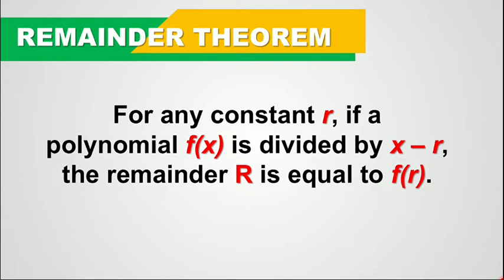Hi guys, in this video I will be explaining to you how the remainder theorem works. So according to this theorem, for any constant r, if a polynomial f of x is divided by x minus r, the remainder denoted by capital letter R is equal to f of r.